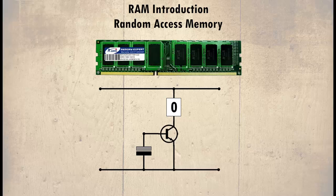The capacitor is like a small battery, and like a battery it loses its charge. However, these capacitors are extremely small, so the charge in them lasts only milliseconds. When the capacitor is charged, the transistor is switched on, indicating a 1. When the capacitor is discharged, the transistor is switched off, indicating a 0.